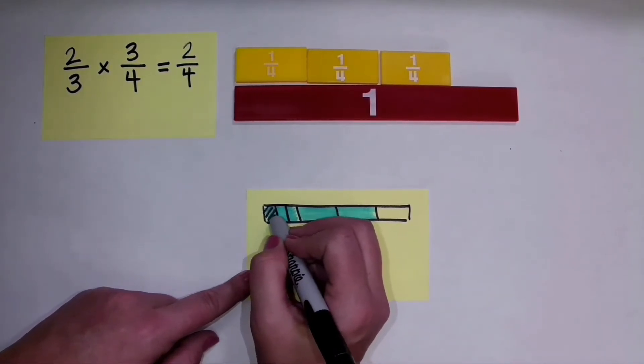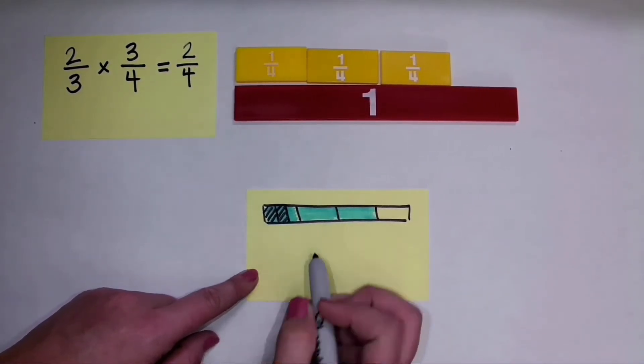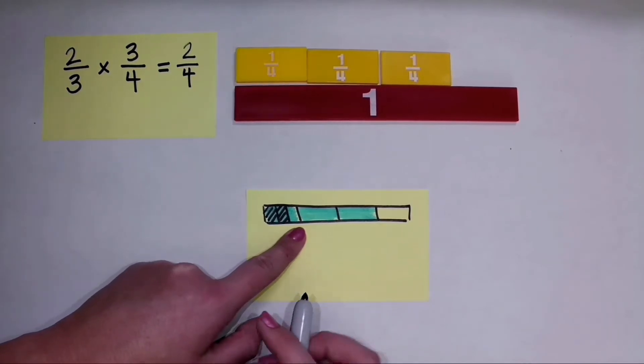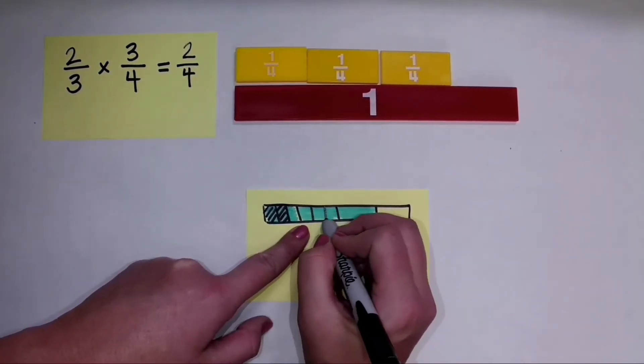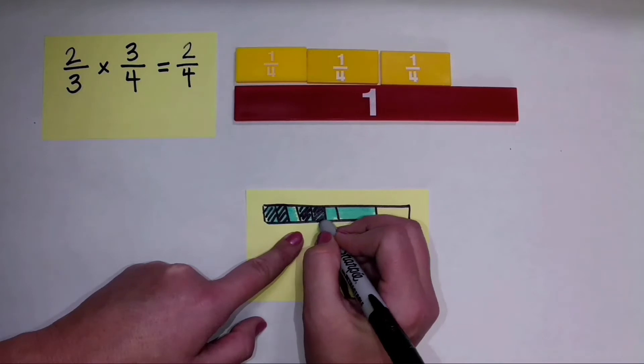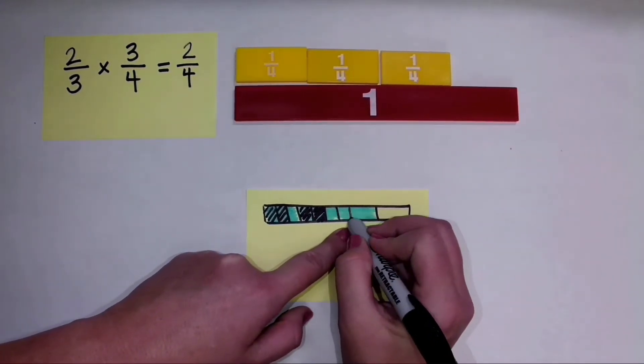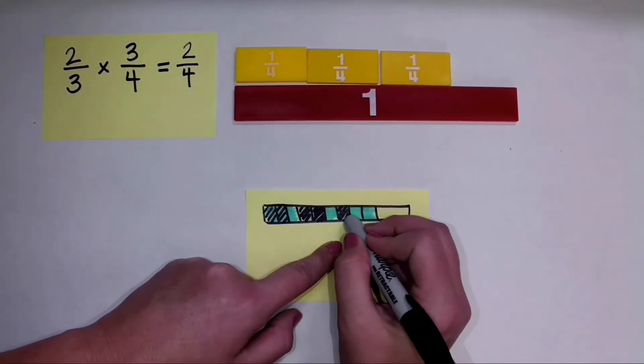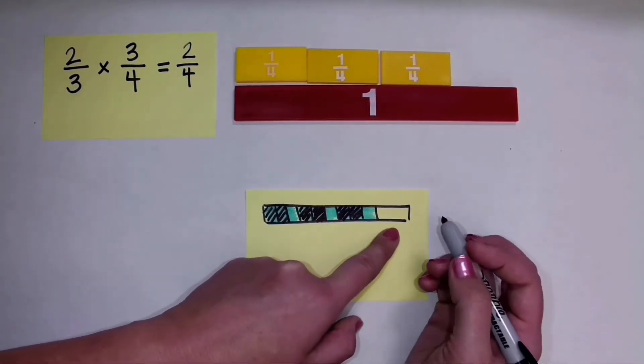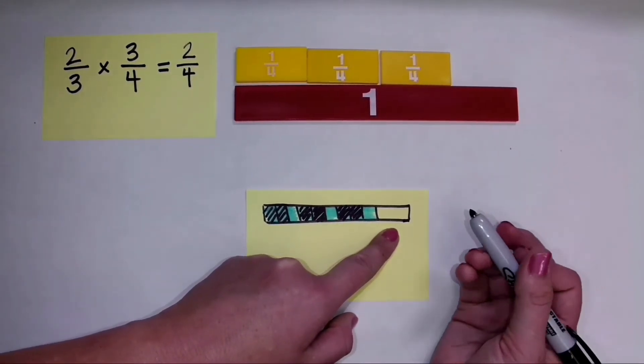And I'll go ahead and shade these. I'll just kind of draw a cross hatching just like that. There's 2 thirds of that 1 fourth piece. I'll do that here with this piece. Here's 2 thirds of that 1 fourth piece. I'll do it with this piece here. 2 thirds of that 1 fourth piece. And if I was dividing each of the fourths into thirds,